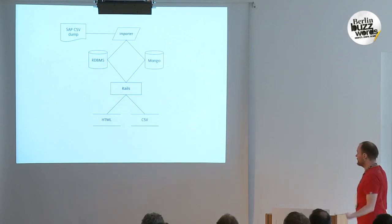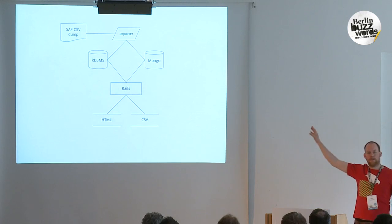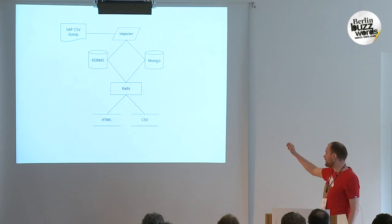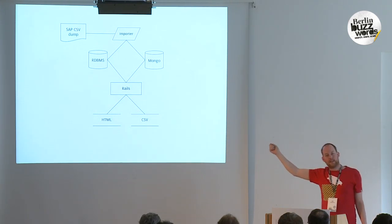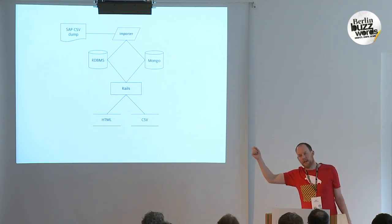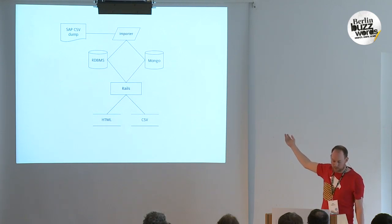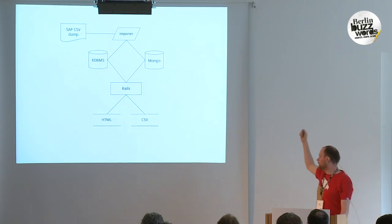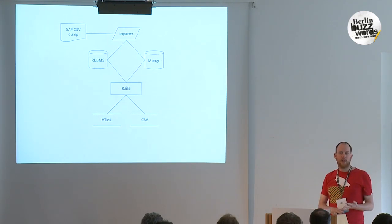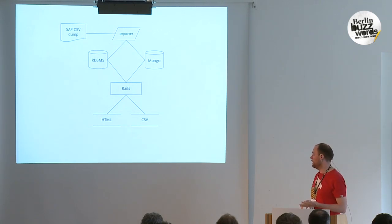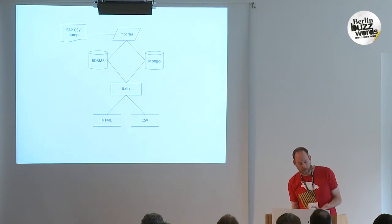So what do we get? Basically the system looks a bit like this. We get a dump of data from the council's SAP system, which gets imported. First off, it gets imported pretty naively into a SQL database. Then that stuff gets aggregated and transformed and put into a Mongo document, one per day. And then some more stuff happens with that, which I'll come onto later. The front-end application is a Rails app talking to Mongo and to Postgres, producing HTML and CSV.